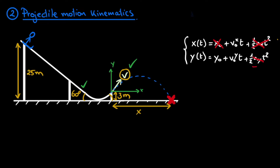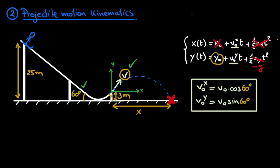In the y direction, the acceleration is minus g — g for gravitational acceleration, and a minus sign because it points downwards. The equations contain the initial velocity in the x and y directions, v-zero-x and v-zero-y. Even though not initially given, we can obtain them by taking into account the slope of the ramp, which is 60 degrees. The initial velocity components are simply the initial velocity found in the previous part projected in the x and y directions. And y-zero is 3 meters, the height above the ground at which the ski jumper leaves the ramp.